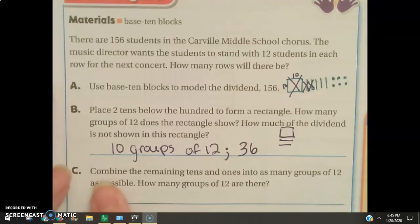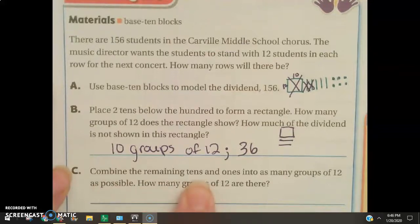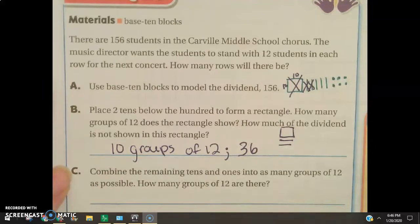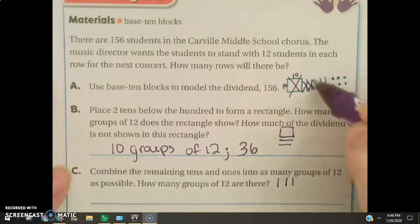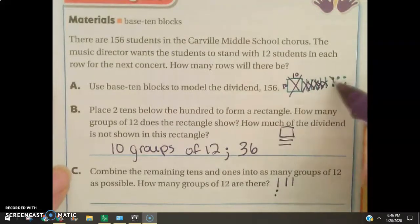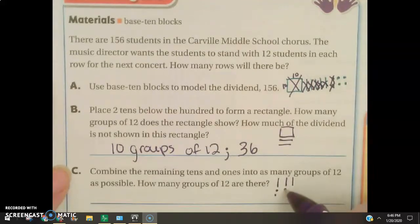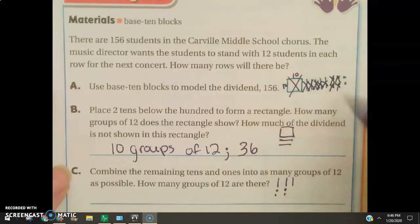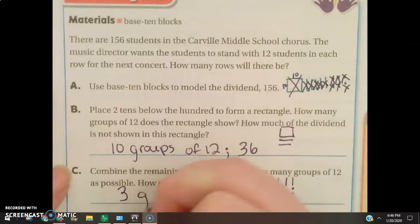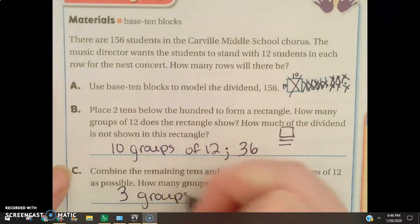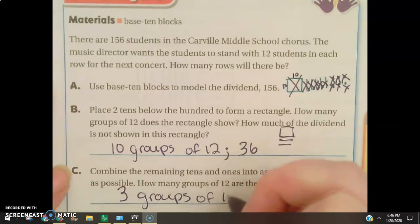So, C says, combine the remaining tens and ones into as many groups of 12 as possible. And how many groups of 12 are there? Well, we have 1, 2, 3. So, that's using these 3 tens, and 1, 2, 1, 2, 1, 2. So, there are 3 groups of 12.